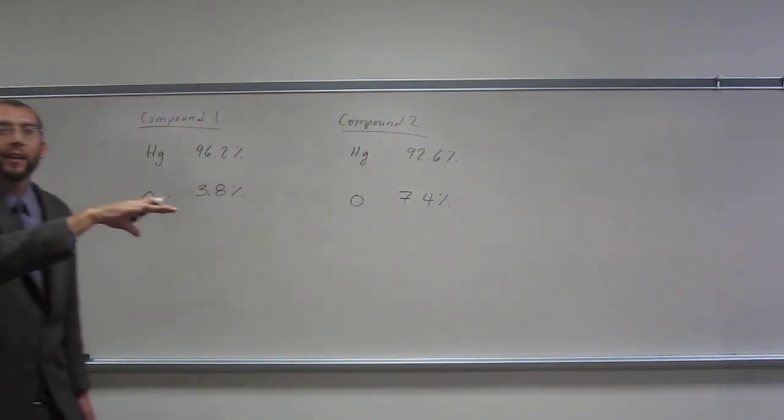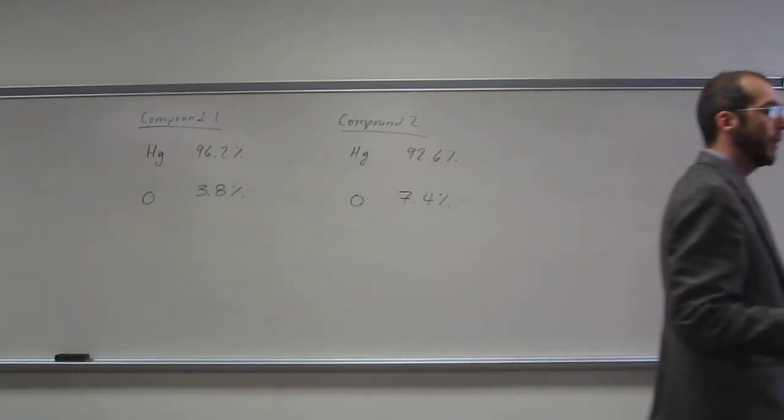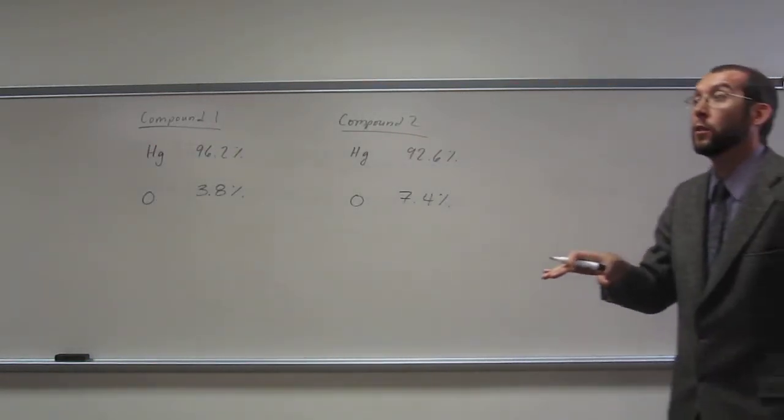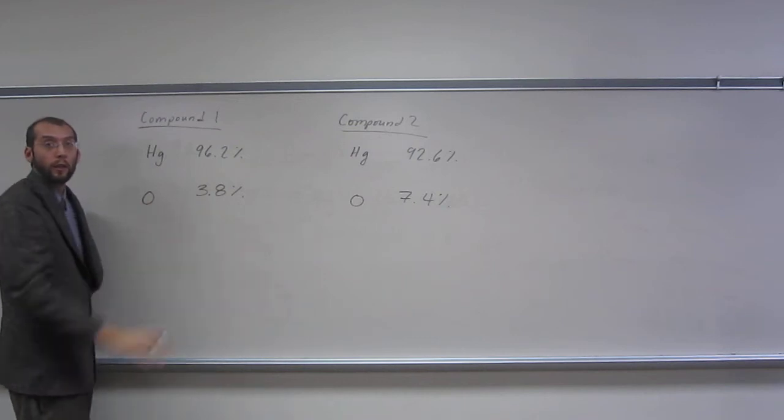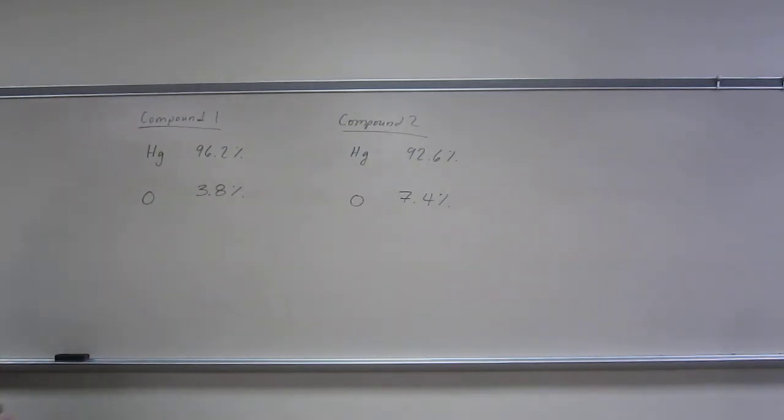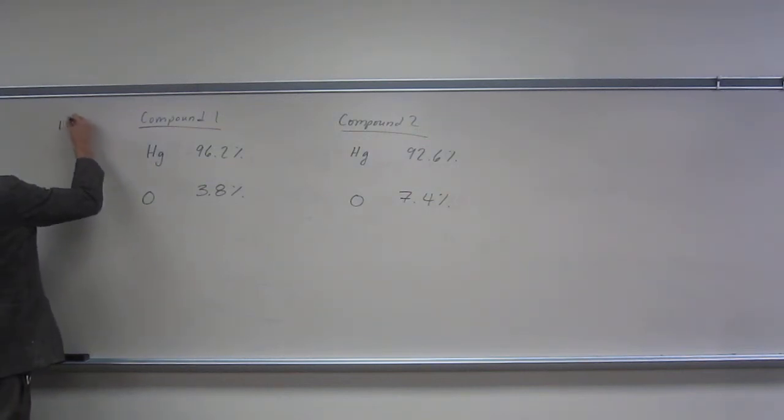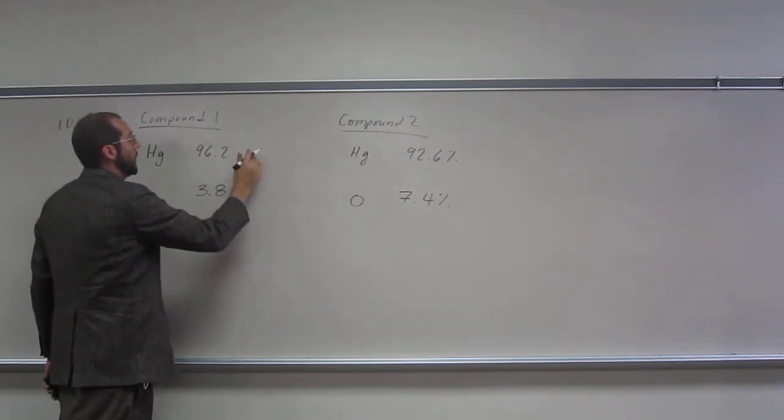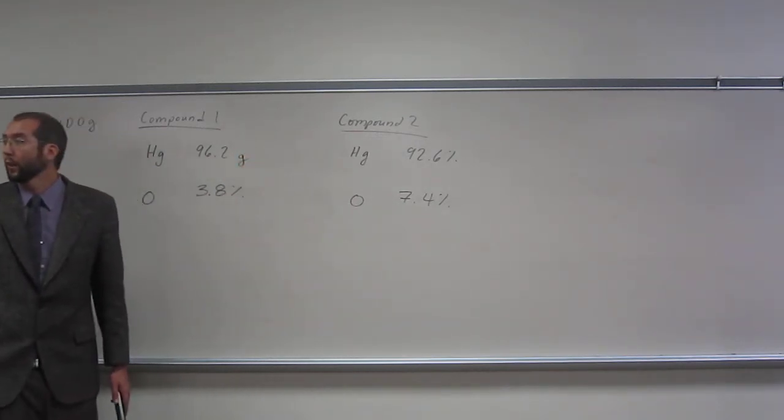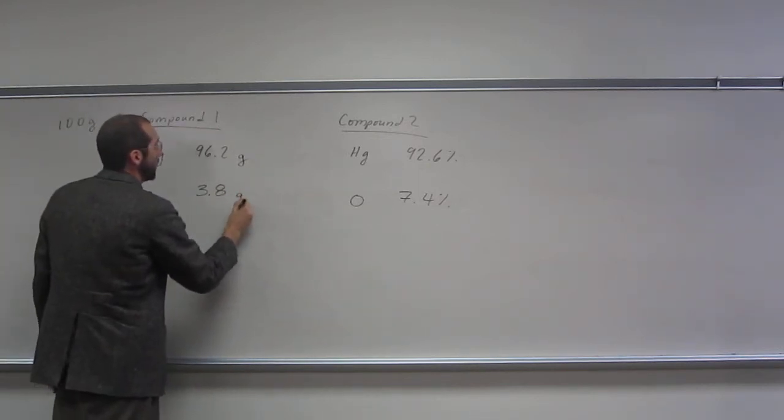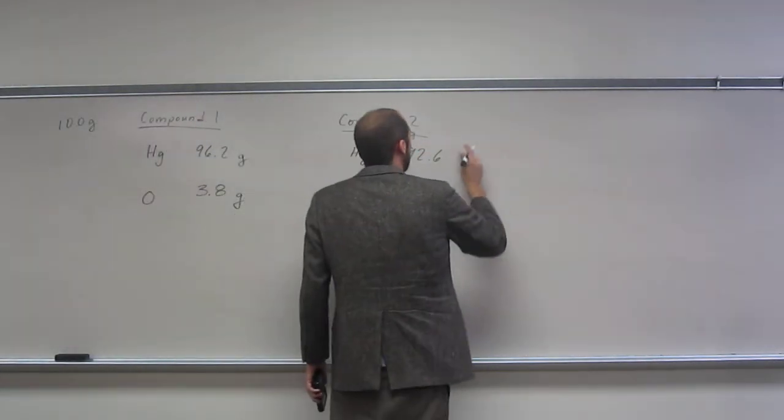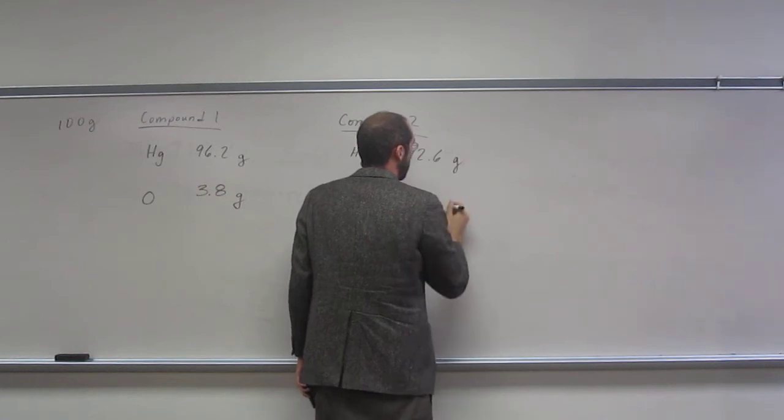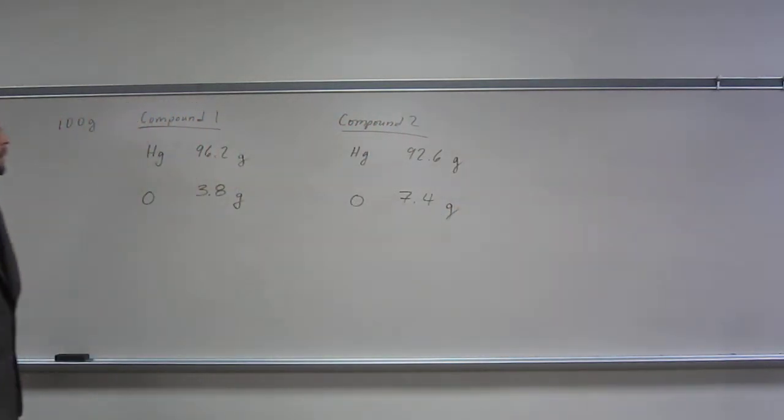It didn't give us the mass total of each of these compounds, so we can just put any mass that we want to in there. As long as that mass is 96.2% mercury and 3.8% oxygen. If we say that there's 100 grams of compound one, then this 96.2% becomes 96.2 grams. Is everybody okay with that? And the same thing happens there. We're also saying that there's 100 grams of compound two.